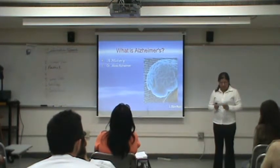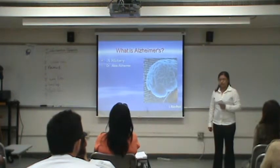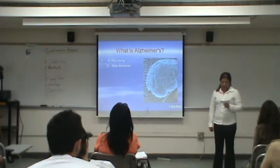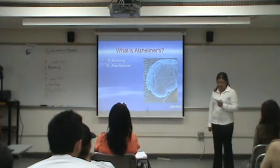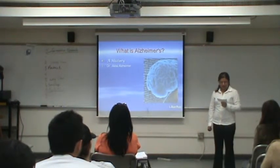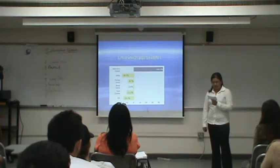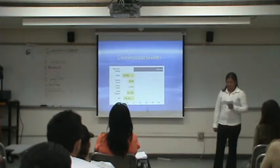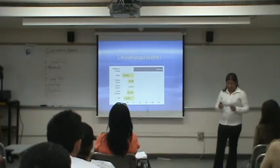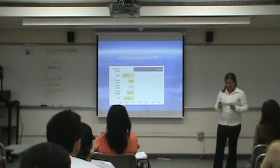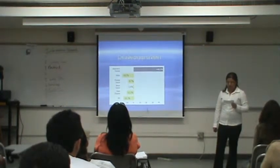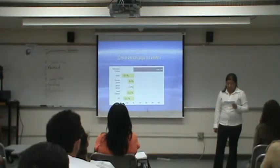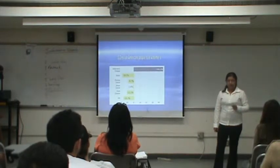According to the Alzheimer's Association in 2009, Alzheimer's disease affects as many as 5.3 million Americans living with Alzheimer's disease. But what does Alzheimer's disease exactly do to our brain? Alzheimer's destroys brain cells, causing memory loss, especially forgetting and learning information.